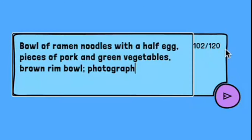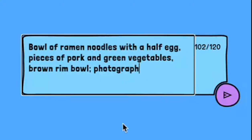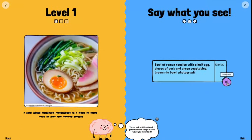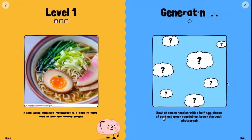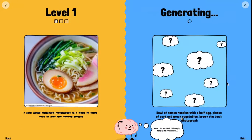You'll notice that I only have 120 characters. I've typed: 'bowl of ramen noodles with half egg, pieces of pork, green vegetables, brown rim bowl,' and I've mentioned that it's a photograph. So I click — it's generating.